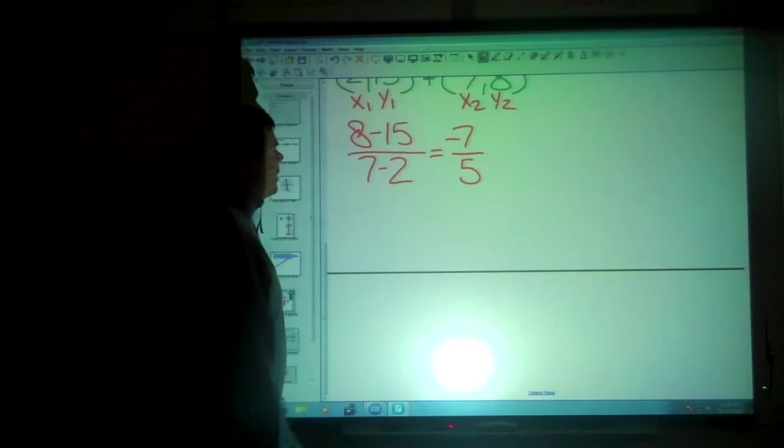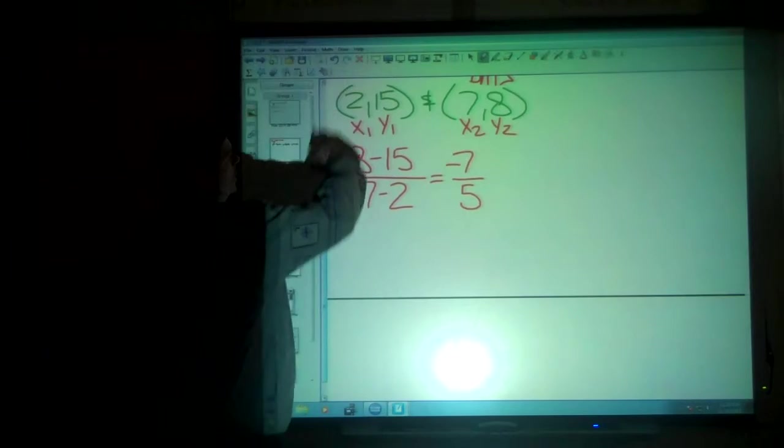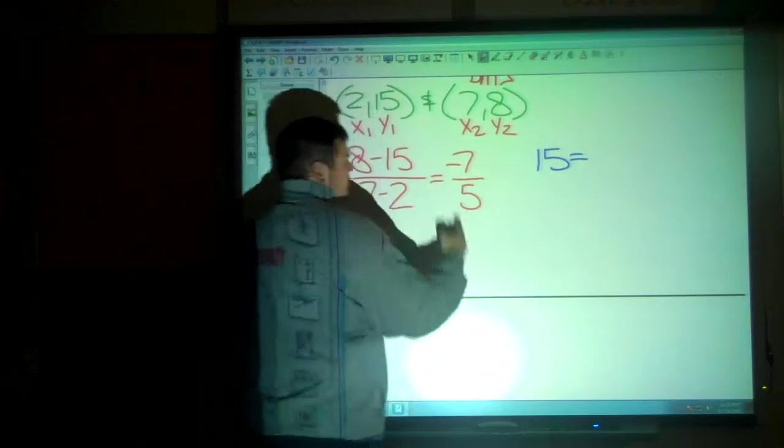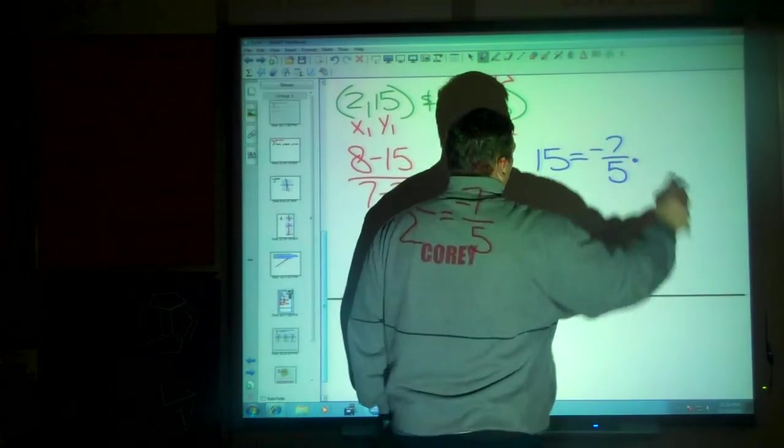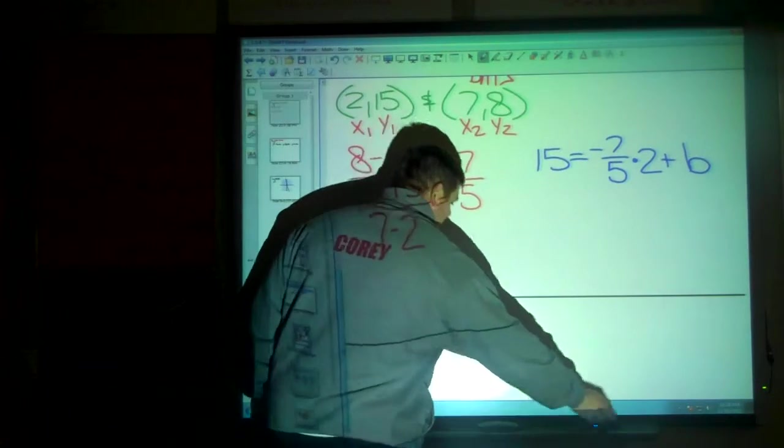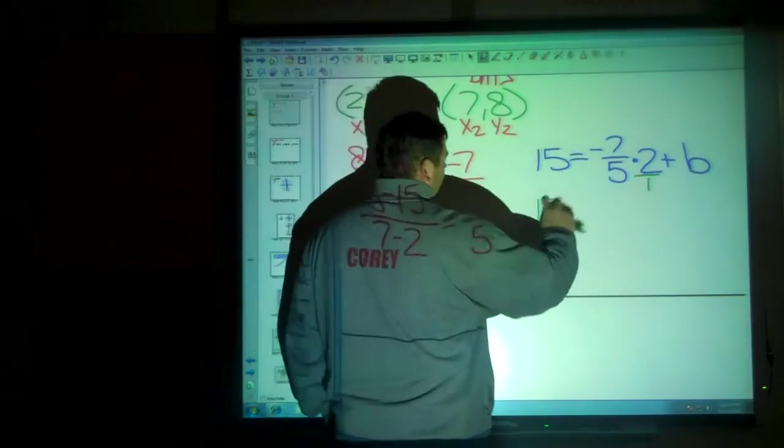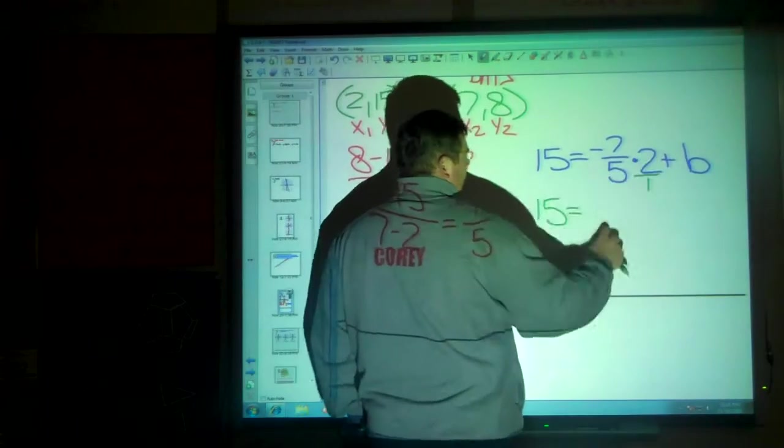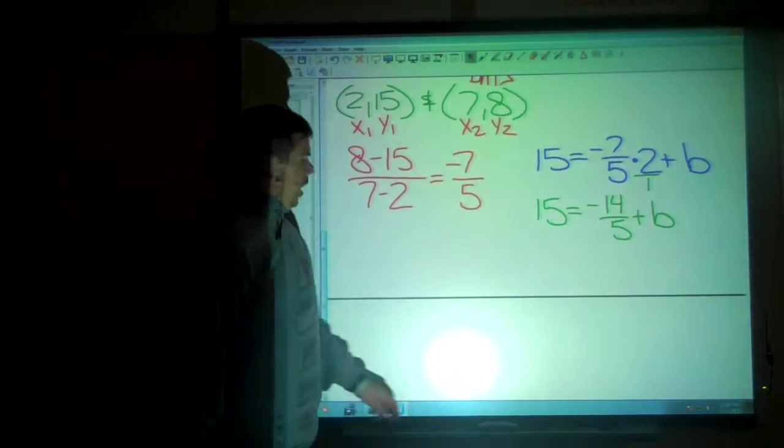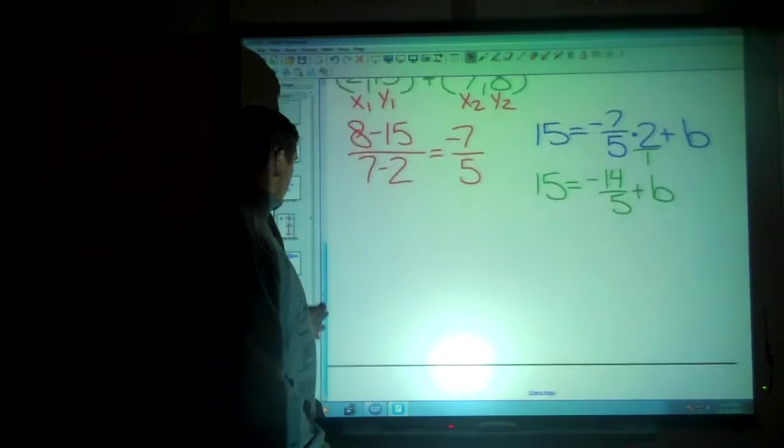I now have a slope. And I choose one of the coordinates. It does not matter which coordinate. So I'll just use the 2 comma 15. I'll say 15 is equal to my given slope negative 7 fifths times the X of 2 plus the B value I don't know. But I'm going to find it out. This I can write as a fraction by putting it over 1. I now have 15 is equal to negative 14 fifths plus B.